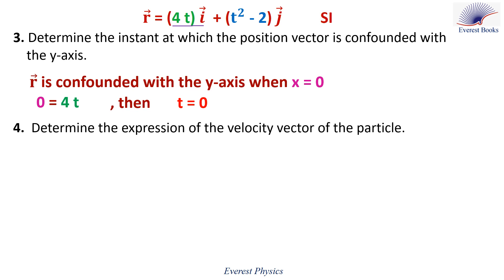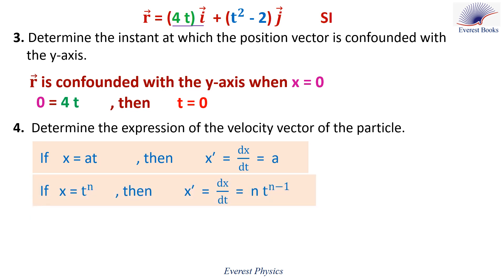Number four: determine the expression of the velocity vector of the particle. Given that if x equals at (with a constant), then the time derivative of x equals a; and if x equals t to the power n (with n constant), then the time derivative of x equals n times t to the power (n minus 1). Since the velocity vector is the time derivative of the position vector, v equals r prime. With x equals 4t, x prime equals 4. With y equals t squared minus 2, y prime equals 2t. Therefore, v equals 4i plus 2tj in SI units.